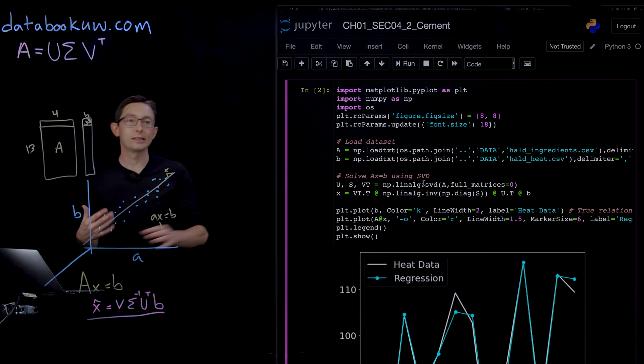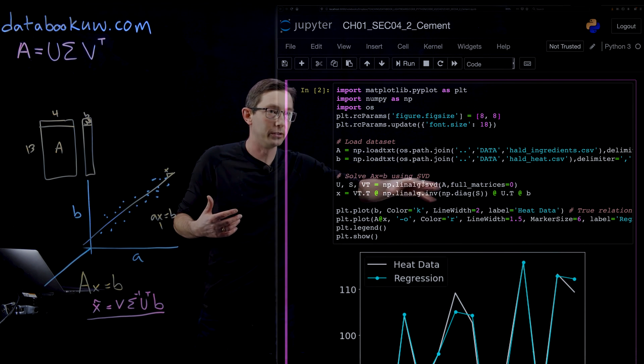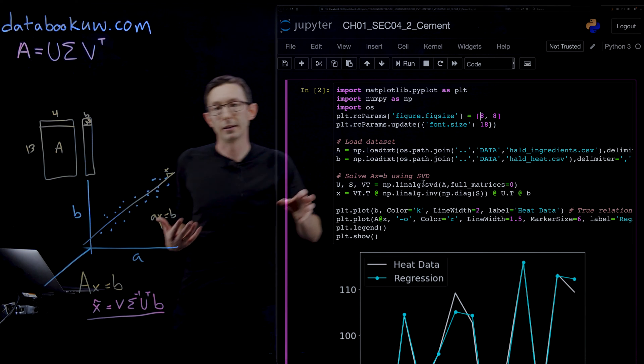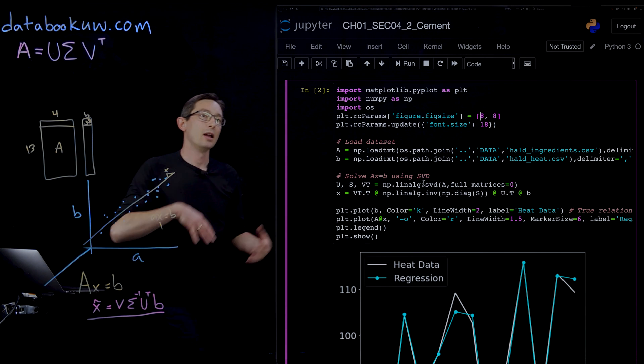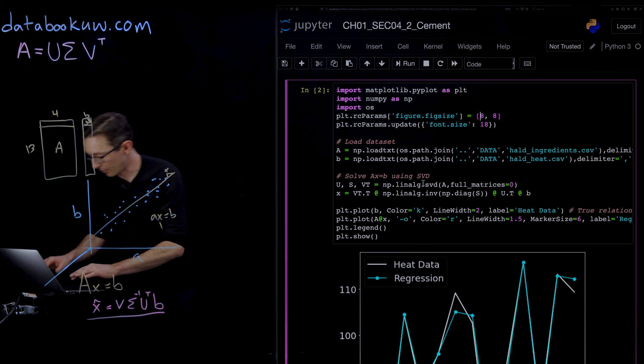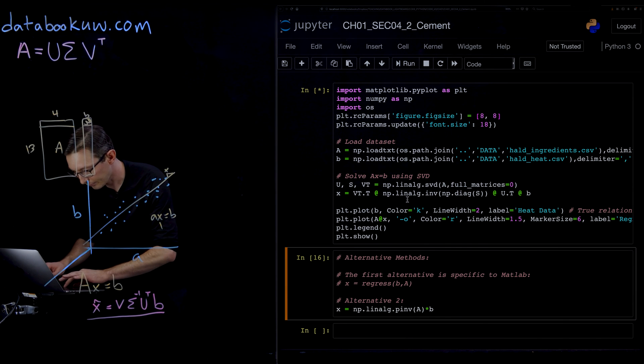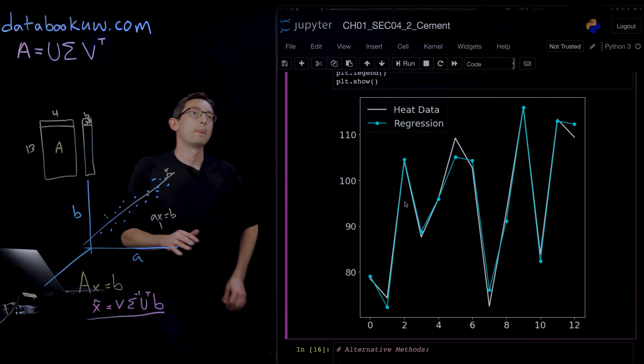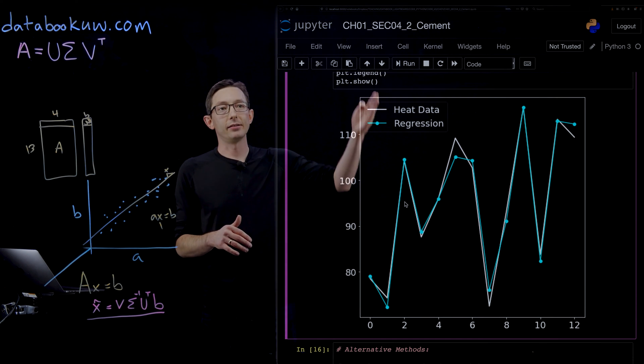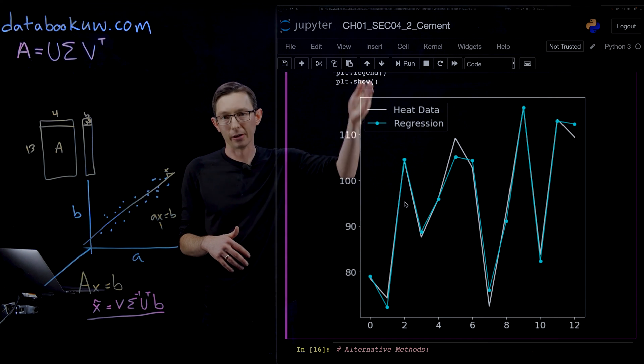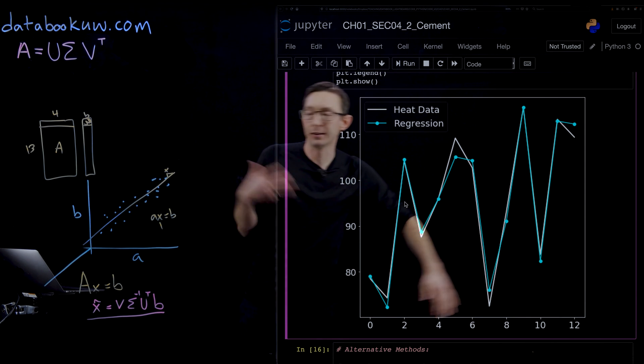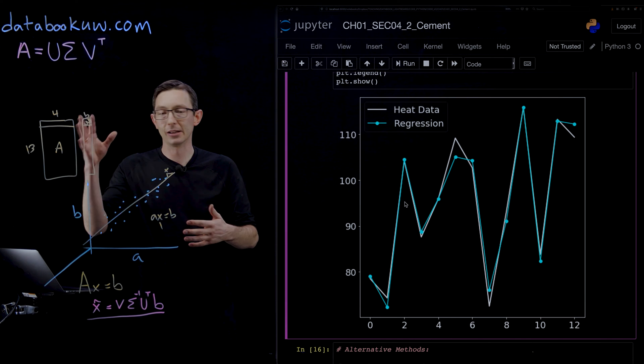Very simple. Again, we're going to base this on the pseudo inverse. We're going to compute the SVD, compute the pseudo inverse to find this best fit slope X, and then we're going to plot the actual heat data—this is probably temperature on the y-axis for these 13 different ingredient mixtures, these 13 different experiments.